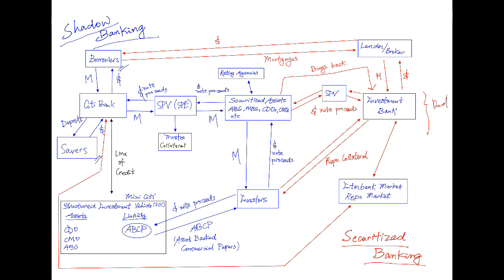Remember, the thing about repo markets and interbank markets is that the type of collateral matters. Once the collateral was substituted by subprime mortgages and those mortgages started to default dramatically, no investors in the interbank market or the repo market were willing to lend money against that collateral. So the interbank market and the repo market froze, which then led to the GFC.